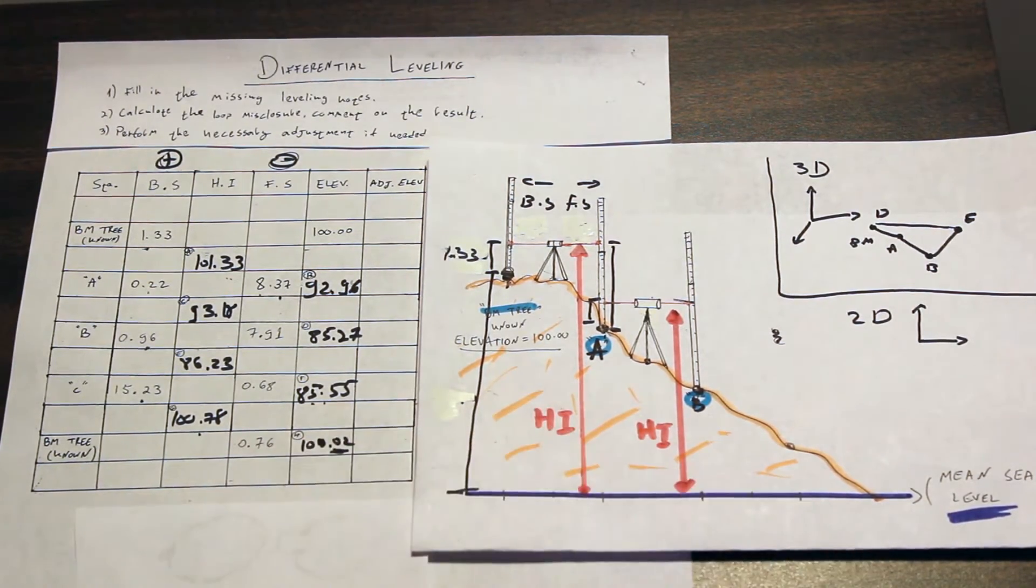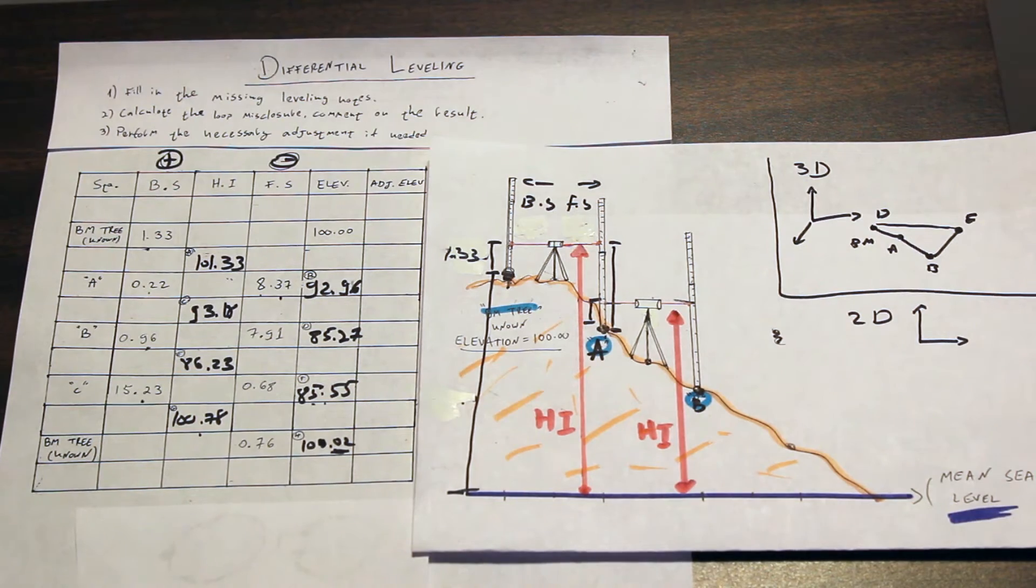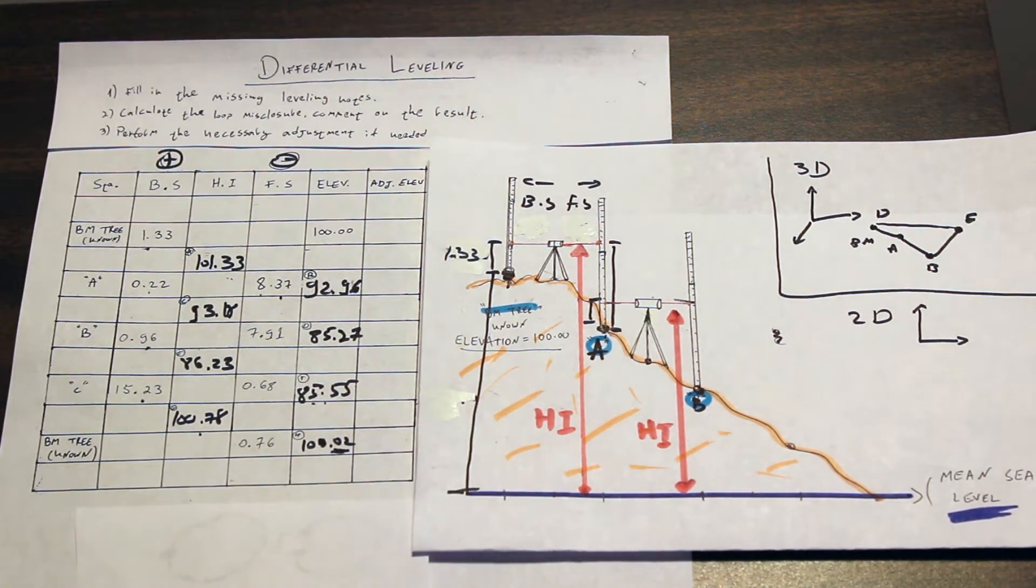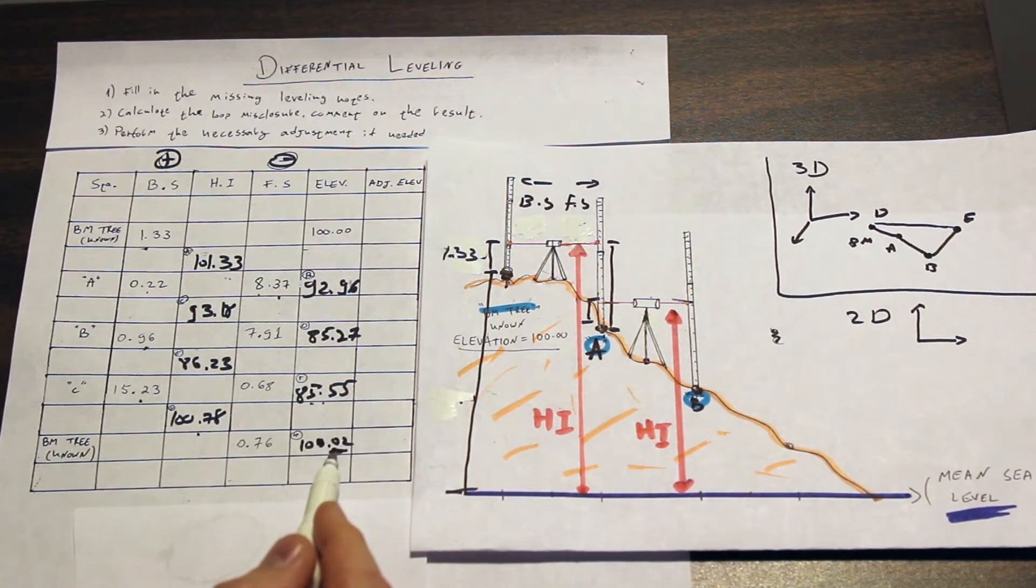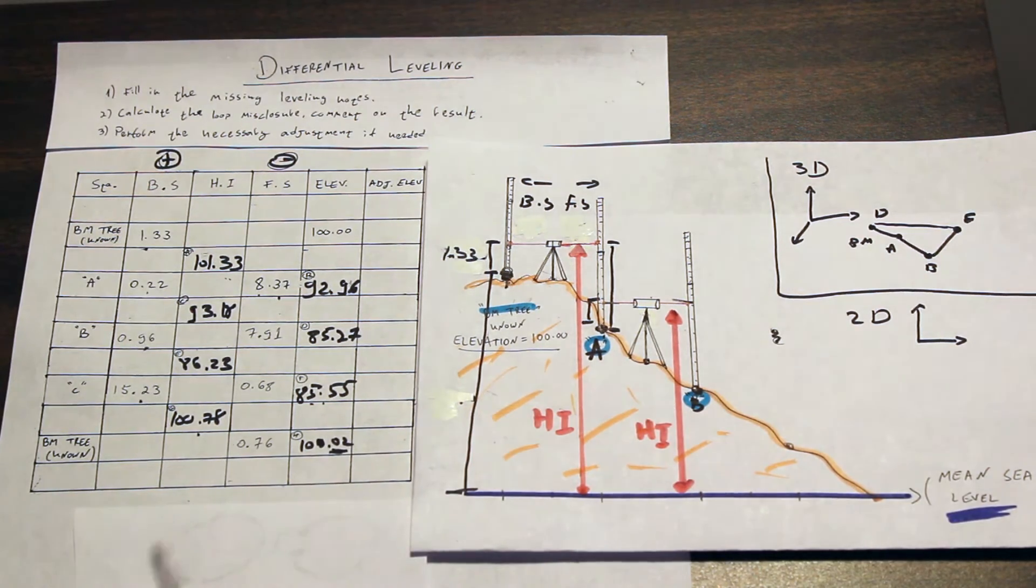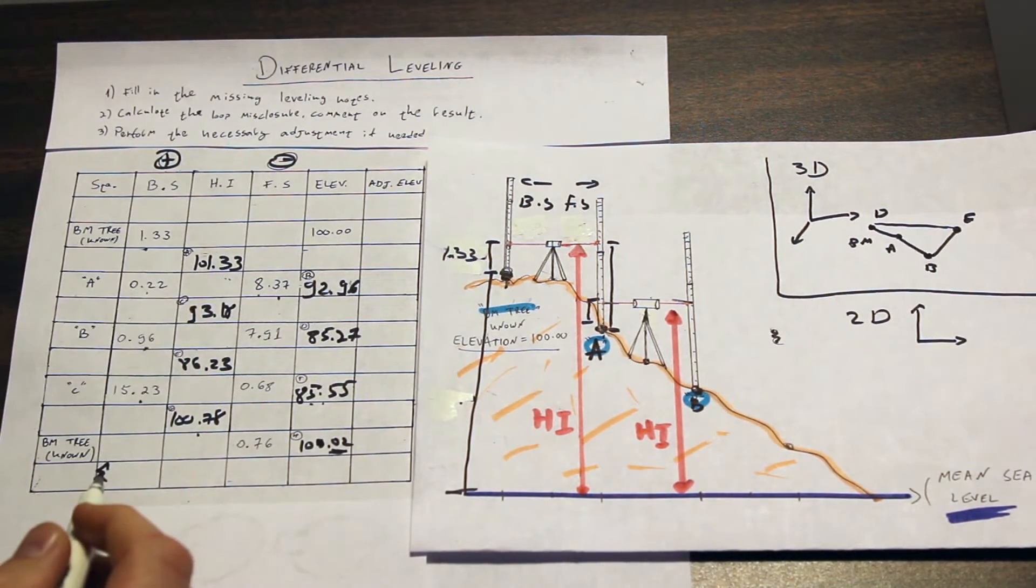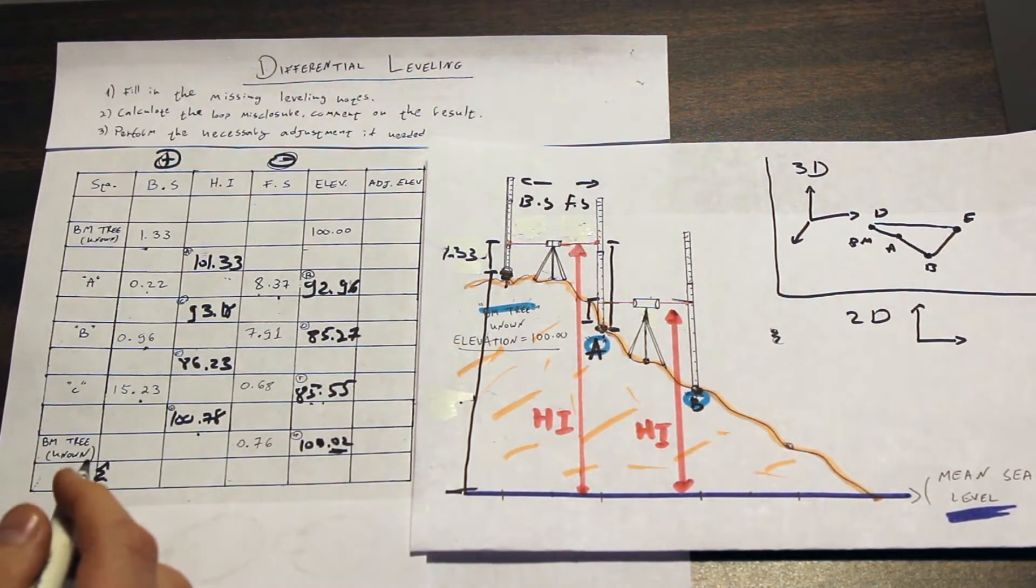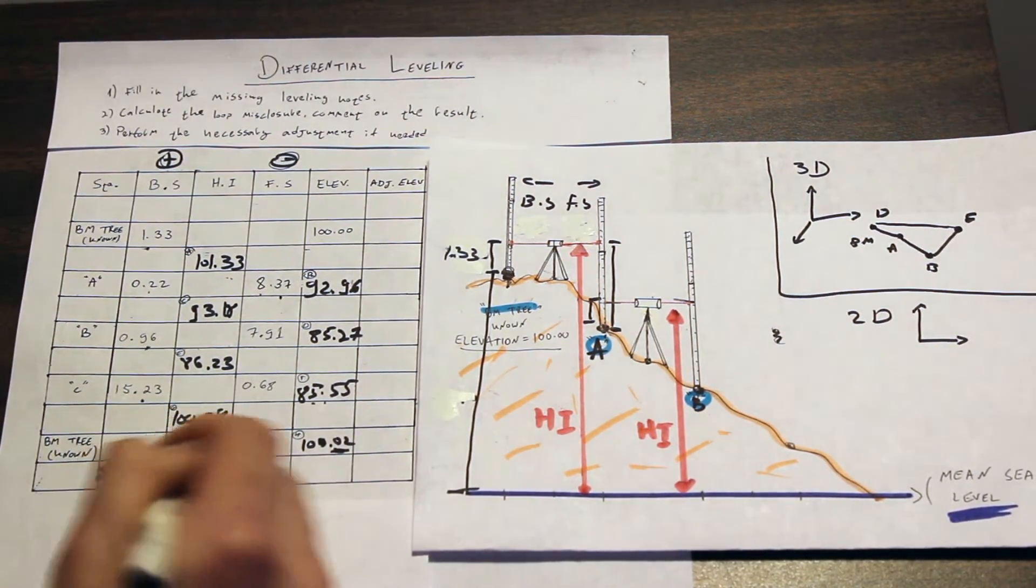So how can we adjust the elevation and fix what we did? Well, the first thing we will do is calculate the loop misclosure, which is actually understanding how much we are far off. Here it's pretty obvious that our answer should be 0.02 meters far off, but in case you need to calculate it and you have a lot of numbers, what you do is you take the sum of the backsides, add them all up, and we will get 17.74.